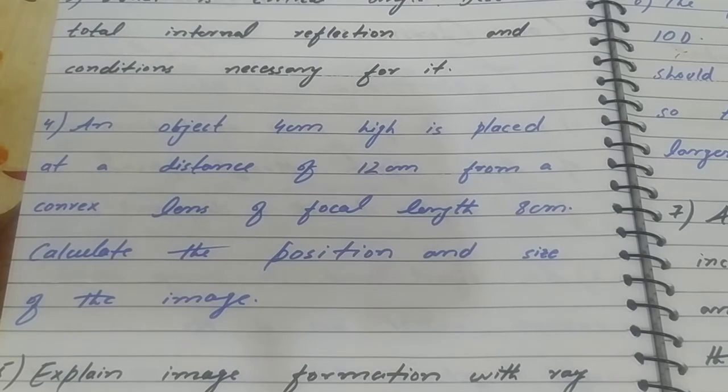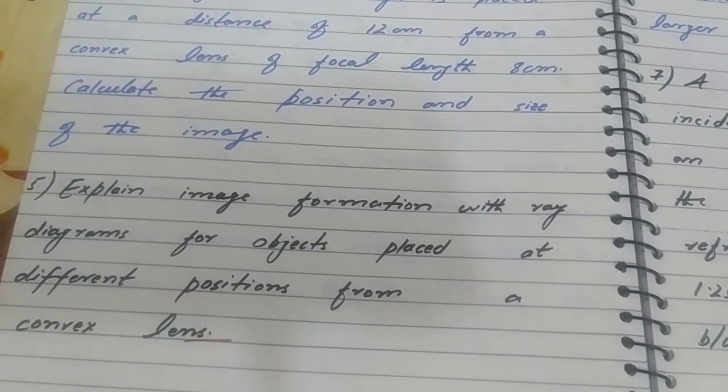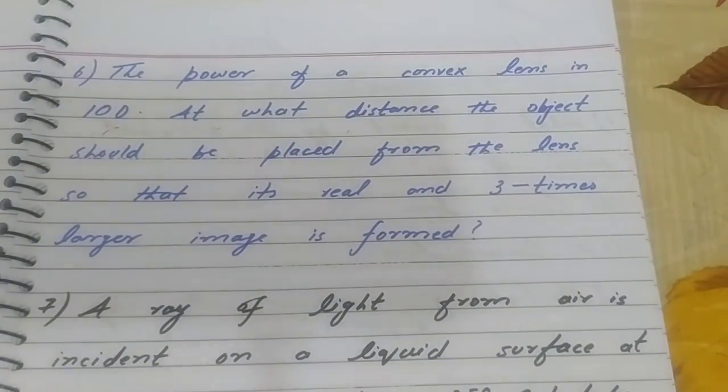The focal length is 8 centimeters. Calculate the position and size of the image. Question five: Explain image formation with ray diagram for objects placed at different positions from a convex lens.